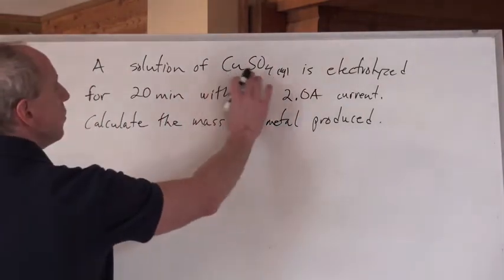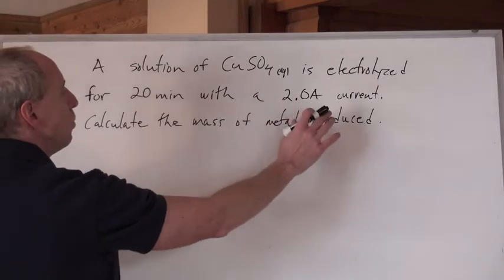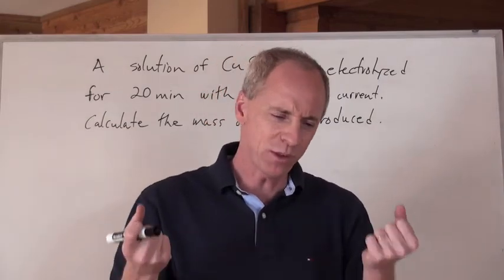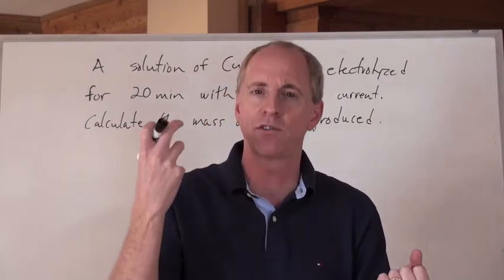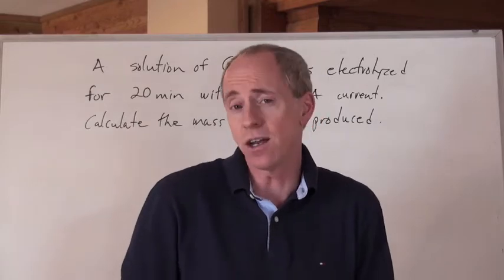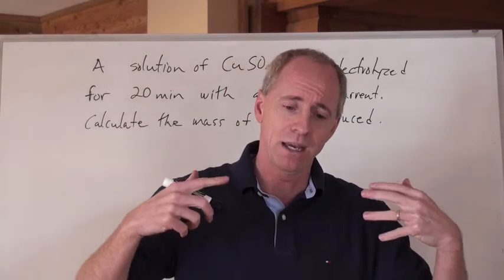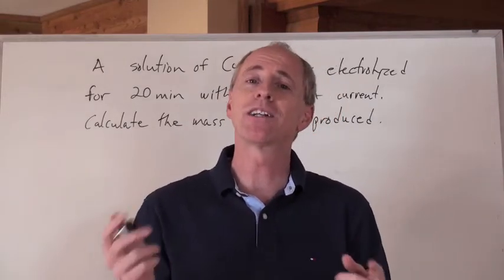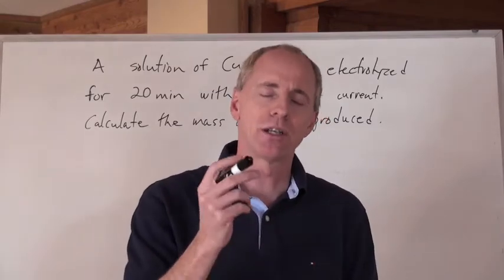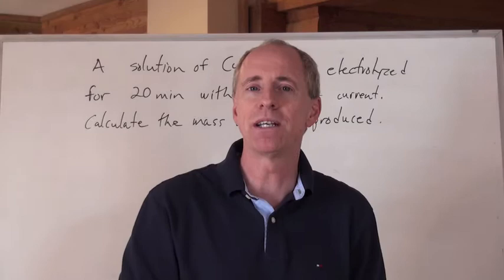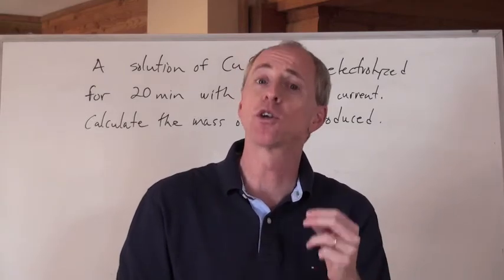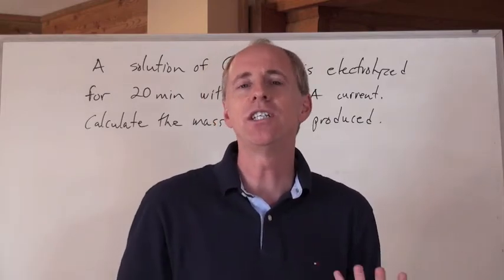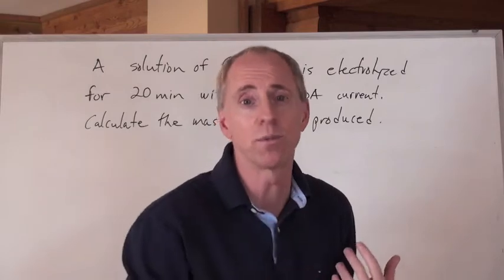A solution of copper sulfate is electrolyzed for 20 minutes with a 2.0 amp current. Now we're not dealing with volts here. Volts is just that potential difference, the thermodynamic driving force that sends electrons from one thing to another. It's got its calculation issues that we'll talk about later. But right now if we want to know something about current or how many electrons we need to do a job, current or amperage is what we want because that's really charge per second or coulombs per second. Coulomb is a unit of charge.